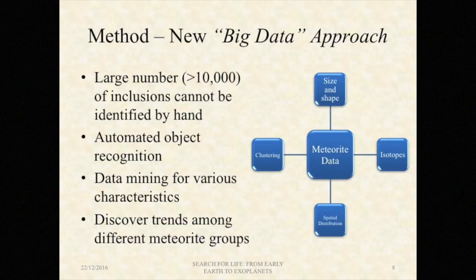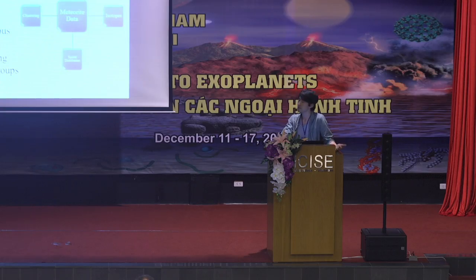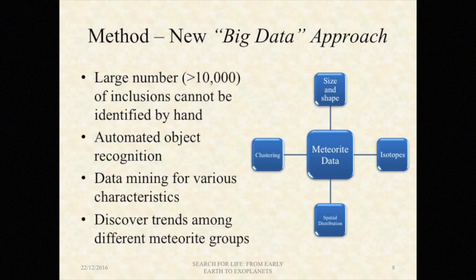How did we exactly investigate that many single images? We used the big data approach, which is a trend in astronomy and many other sciences. There are several reasons for this. One is that large numbers of inclusions cannot simply be handled by hand. Two, by using an automated object recognition tool, we can possibly suppress selection bias. A big advantage is that given a set of raw data of meteorites, we can look for any parameters we are interested in — for example, size and shape, isotopes, spatial distribution, and clustering.